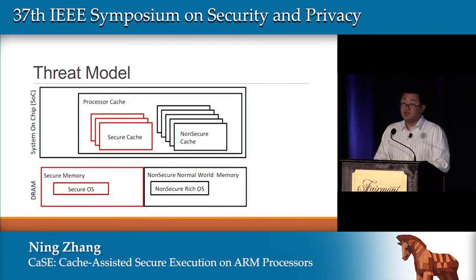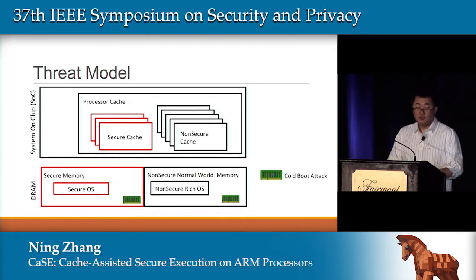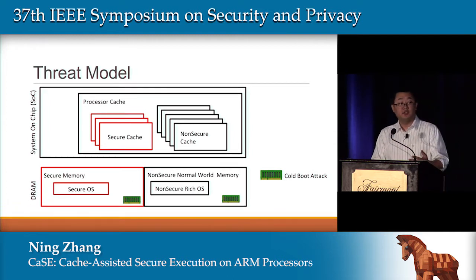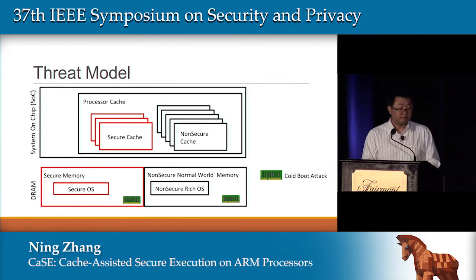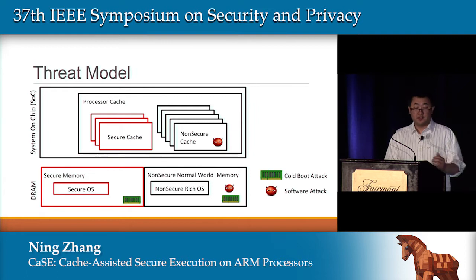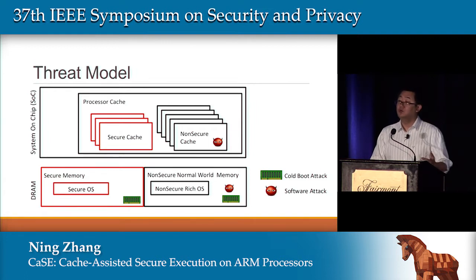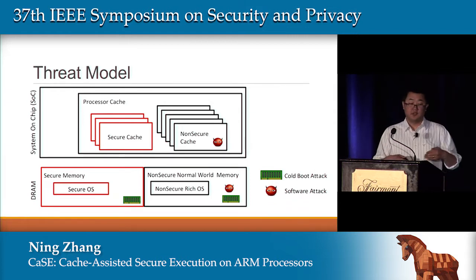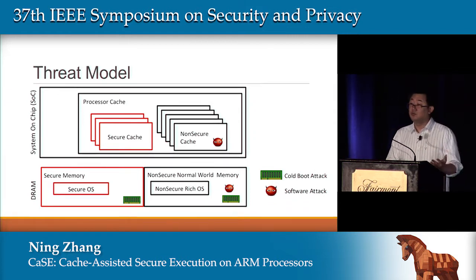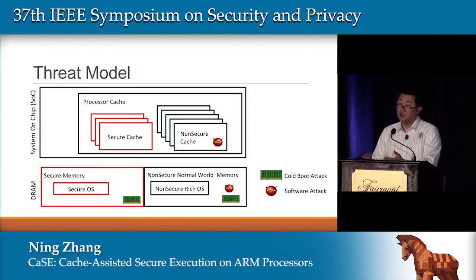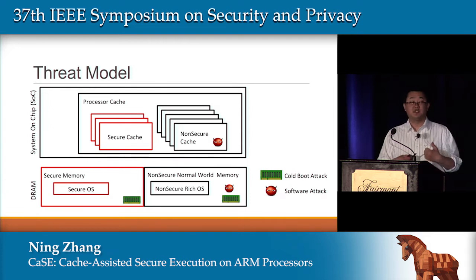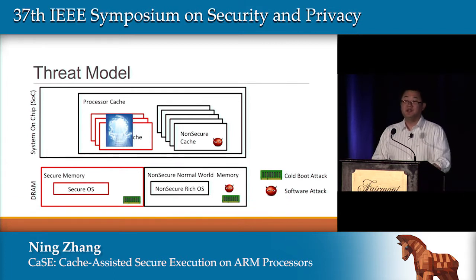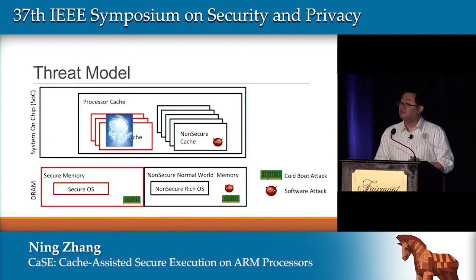What's the capability of the attacker in this model? The cold boot attack can read all physical memory — both secure and non-secure memory. The software attacker compromises the normal world rich OS kernel, getting unlimited read access to normal world memory and also access to the non-secure processor cache since they can control the CPU. So it sounds like the only place safe from the attacker is the secure cache — and that's the haven where I'm putting my system.